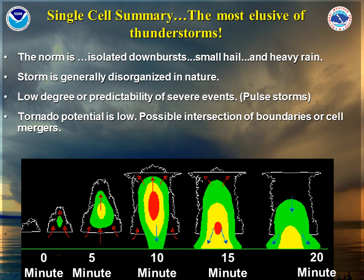Here's the life cycle of a typical single cell storm. Normally, if this storm produces any severe weather, it will be isolated downbursts in the form of small hail and heavy rain. The storm is often disorganized in nature and has a low degree of predictability of severe events. Tornado potential is very low.